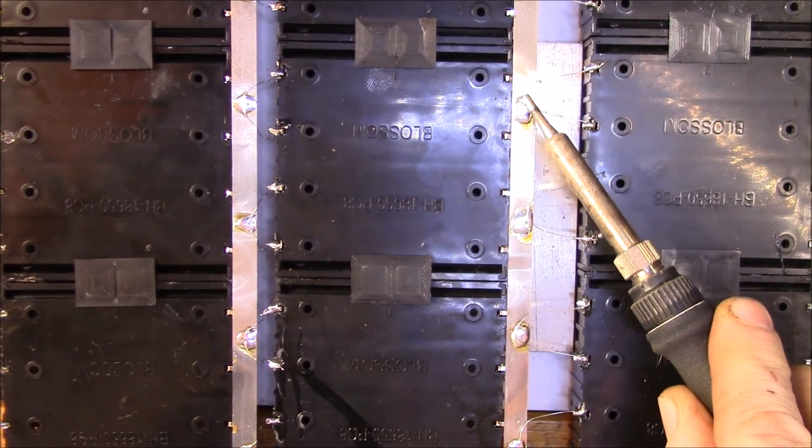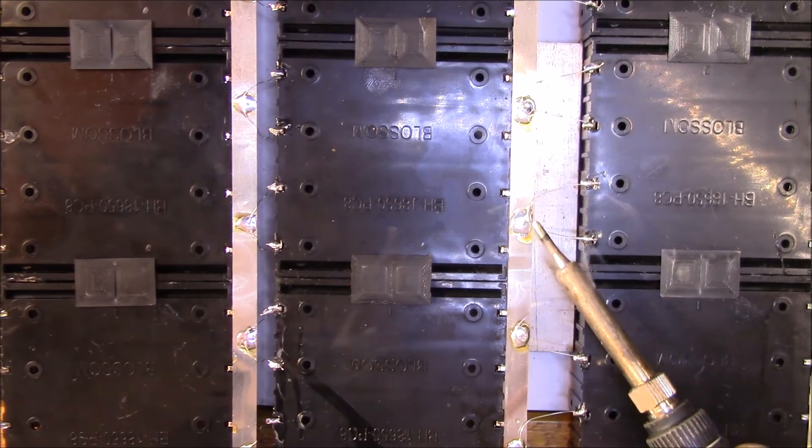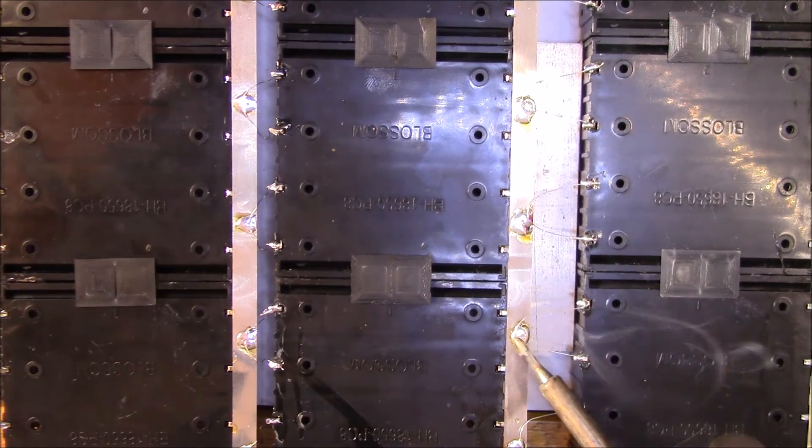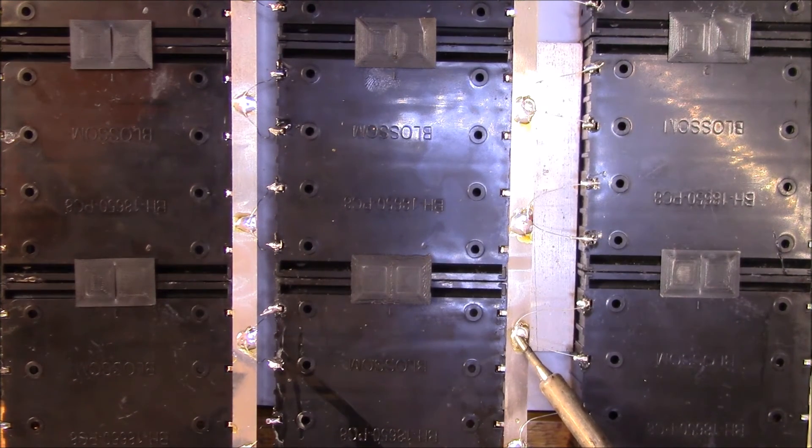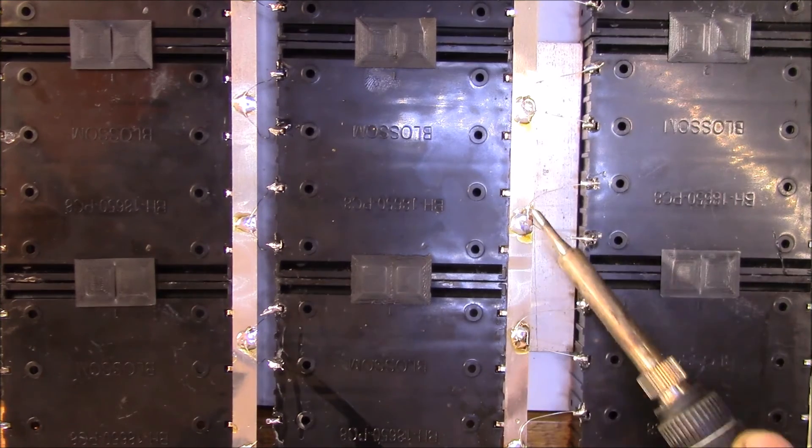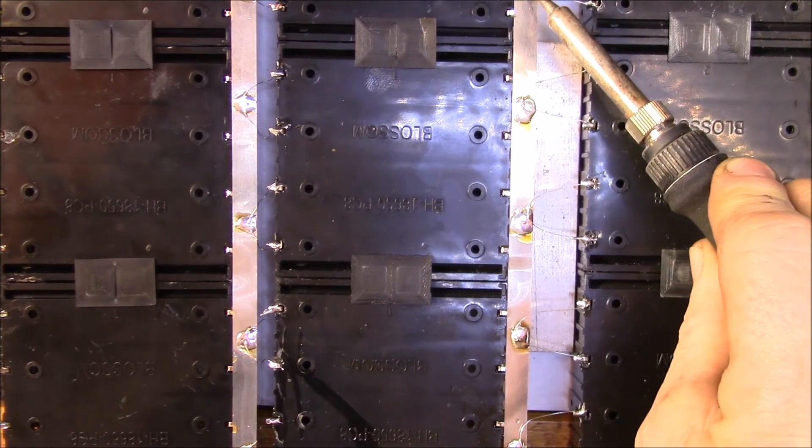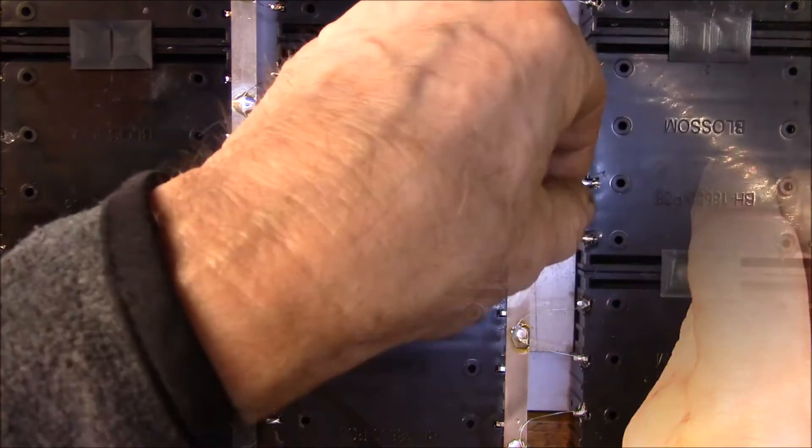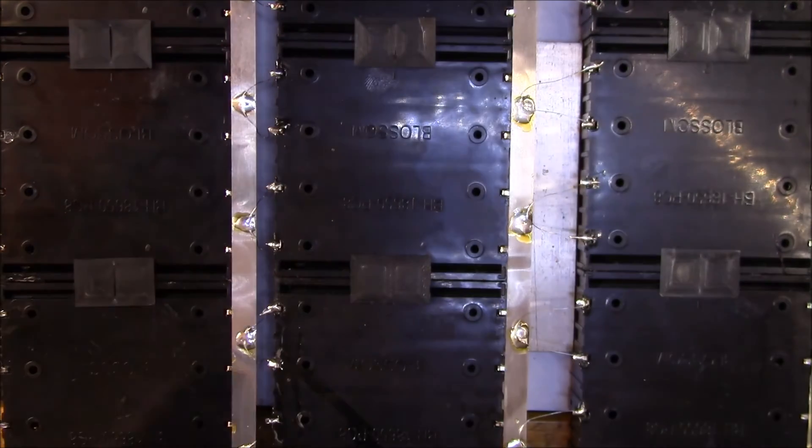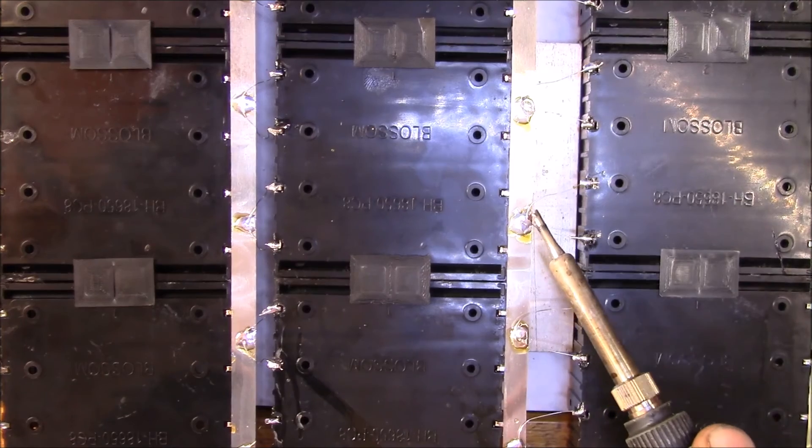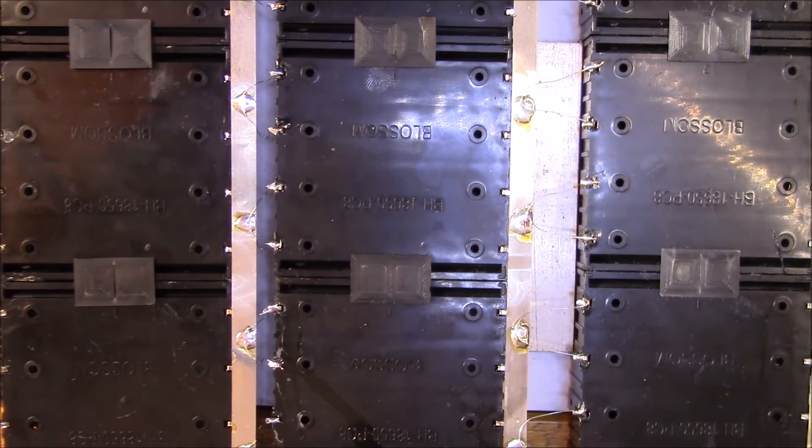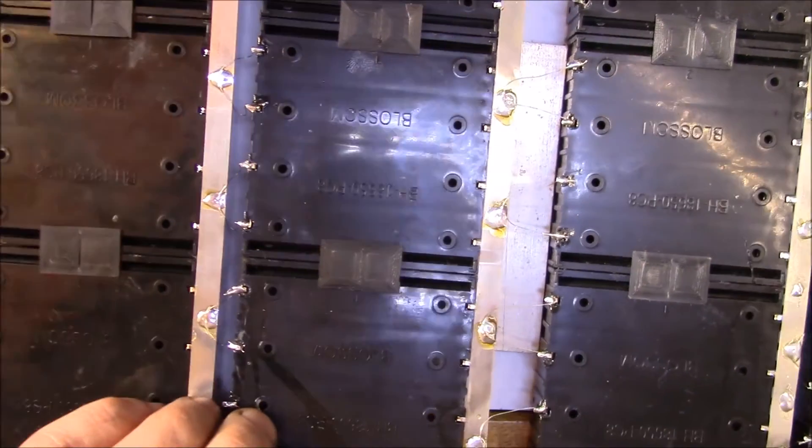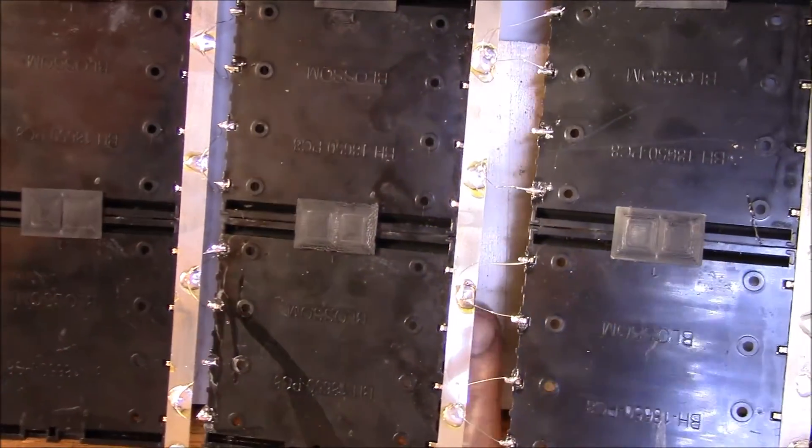You just run down the nickel strip, and since I'm using tinned copper wire, it's already ready to solder. That one's right on the edge, I should probably redo that a little bit. Yeah, I think that's pretty good. Then I can take my spacer out.